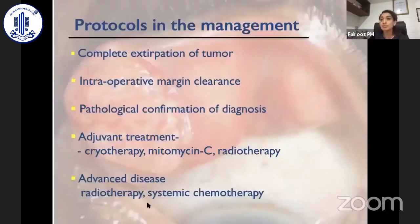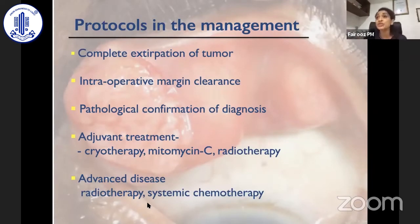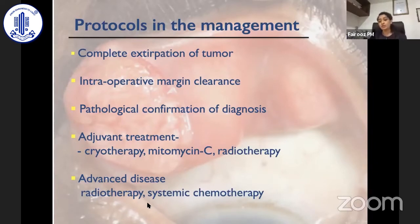The protocols in management are: complete extirpation of the tumor ensuring clear margins with frozen section or Mohs micrographic surgery; pathological confirmation of diagnosis with fixed section including margin status; and adjuvant treatment which in sebaceous gland carcinoma includes cryotherapy, mitomycin C, and radiotherapy. In advanced disease, there are indications for radiotherapy and systemic chemotherapy.